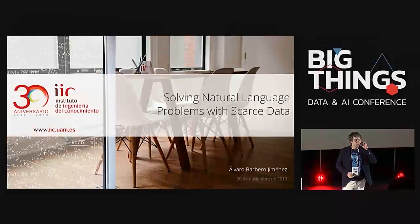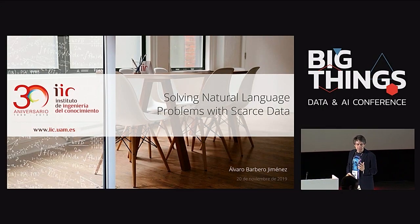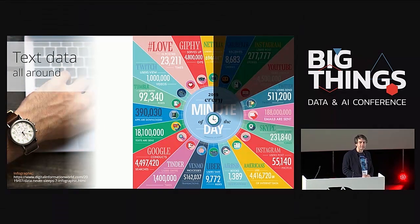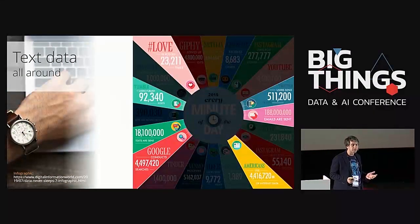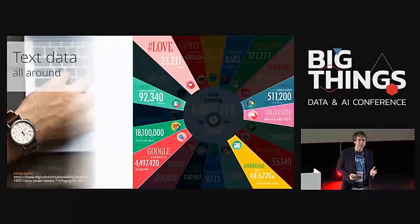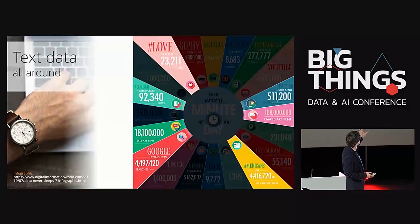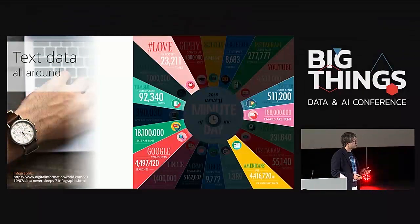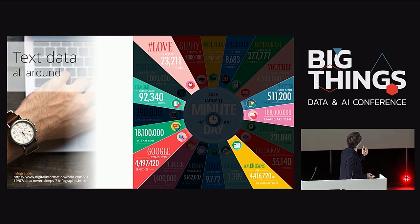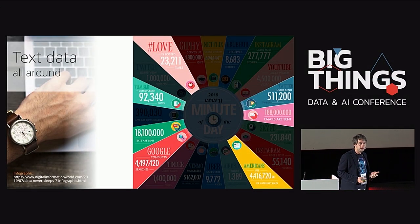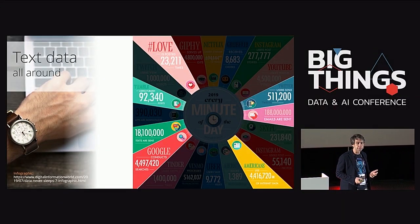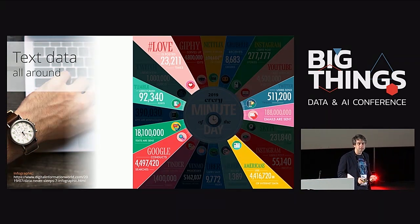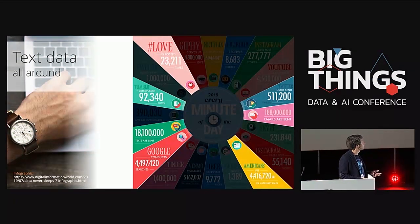Good morning everybody, thanks for choosing this talk so early in the morning. We're going to talk about text, and text is everywhere. Maybe you already know this infographic about how much data is generated on different regions of the internet every minute. The highlighted regions are those mainly made of text: Google searches, Tumblr posts, emails. If you are unable to process text in your data analysis pipeline, you are missing out a lot of information.